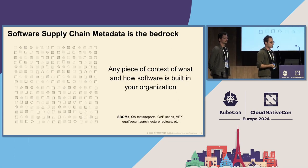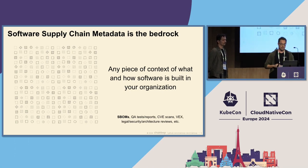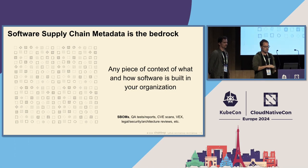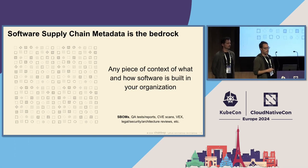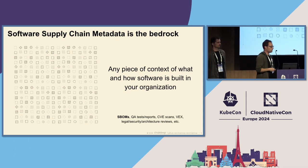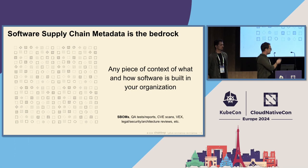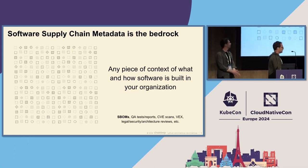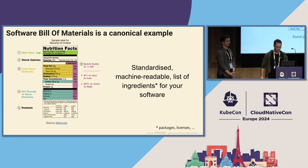In our experience, many of these use cases start with software supply chain metadata. By software supply chain metadata, we mean any piece of information, any context that you can get about what you're building and how you're doing it. This can include CVE scans, VEX files, some legal security architecture reviews, QA tests, and of course, software bill of materials.